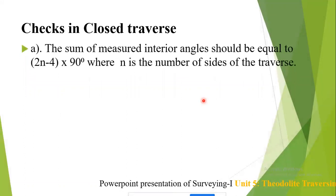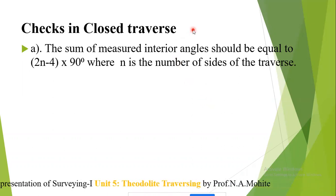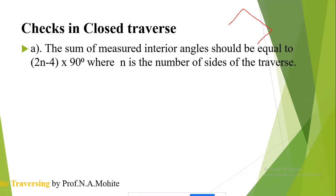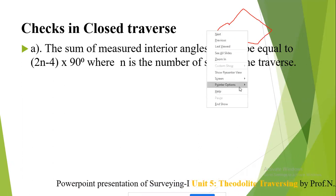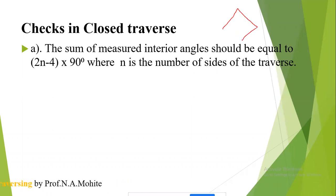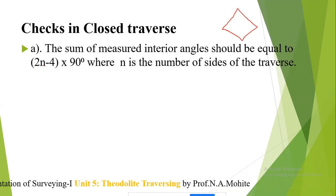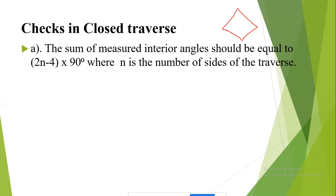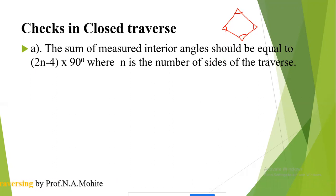The first check in a closed traverse: the sum of the measured interior angles should be equal to (2n − 4) × 90°, where n is the number of sides of the traverse. For example, if the traverse has 4 sides, then (2×4 − 4) × 90° = 4 × 90° = 360°. So the sum of all interior angles should equal 360°.